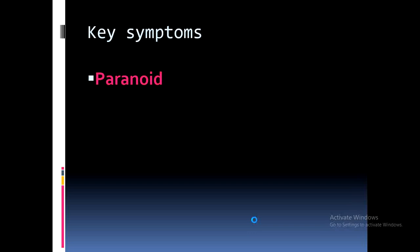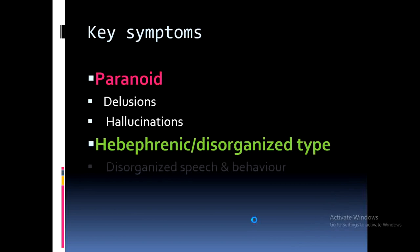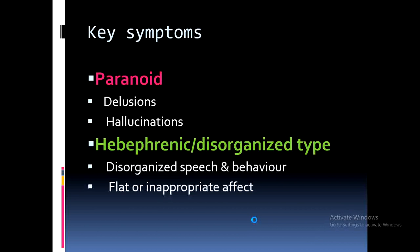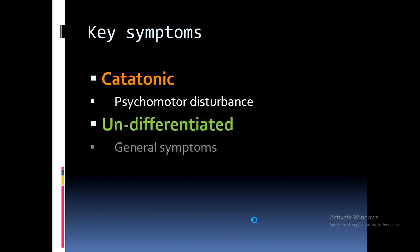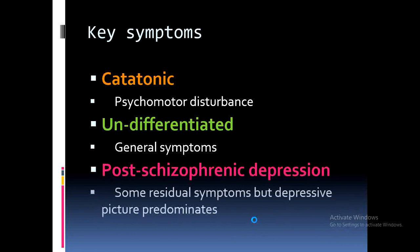Looking at the key symptoms of each type: paranoid schizophrenia features delusions and hallucinations — these are known as positive symptoms. Hebephrenic or disorganized schizophrenia presents with disorganized speech and behavior, and flat or inappropriate affect. Catatonic schizophrenia's key symptom is psychomotor disturbance. Undifferentiated schizophrenia has general symptoms.